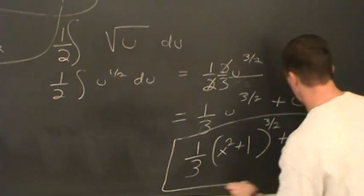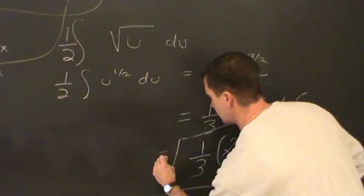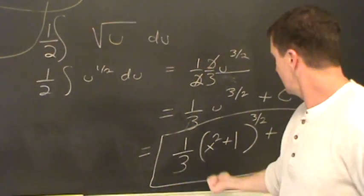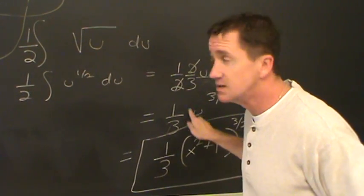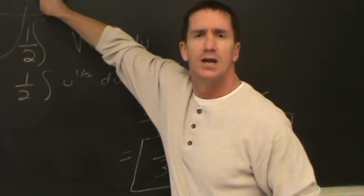And the best part, this is your expression, this is the anti-derivative. You want to check this? Take the derivative of this. Yes, it will require a chain rule, but if you take the derivative of this, you'll come right back to this.